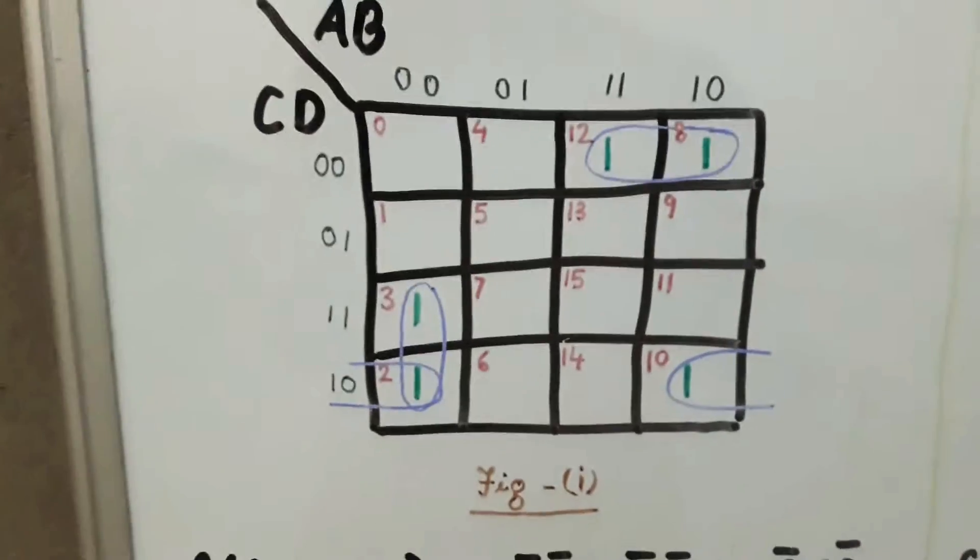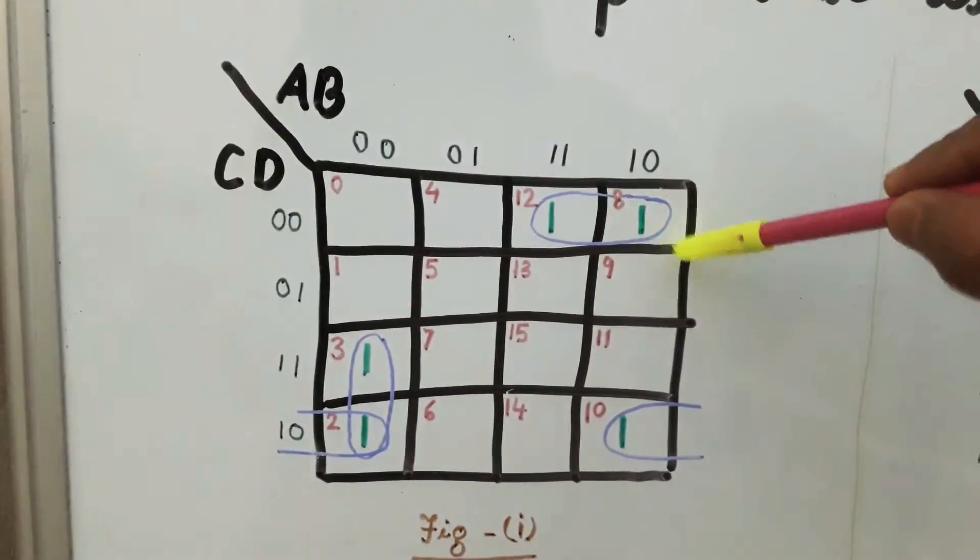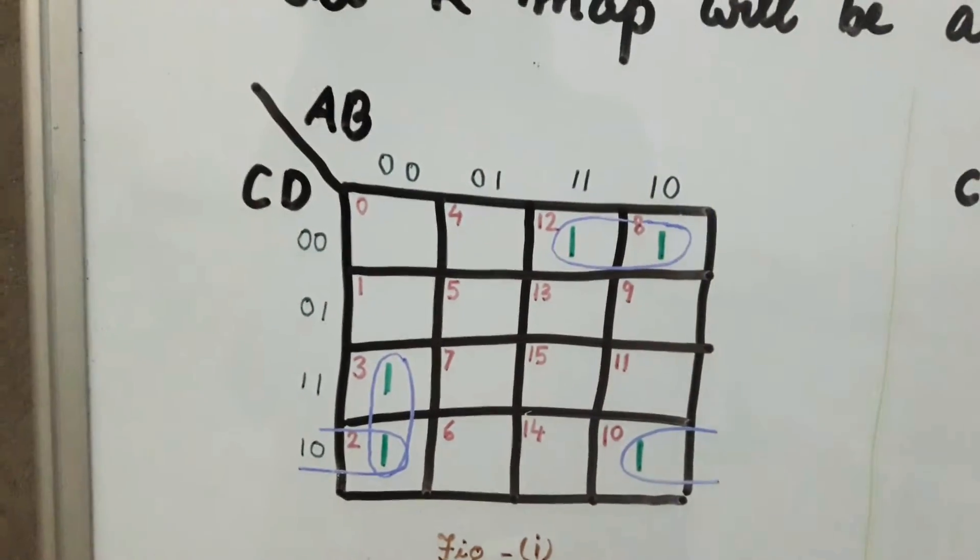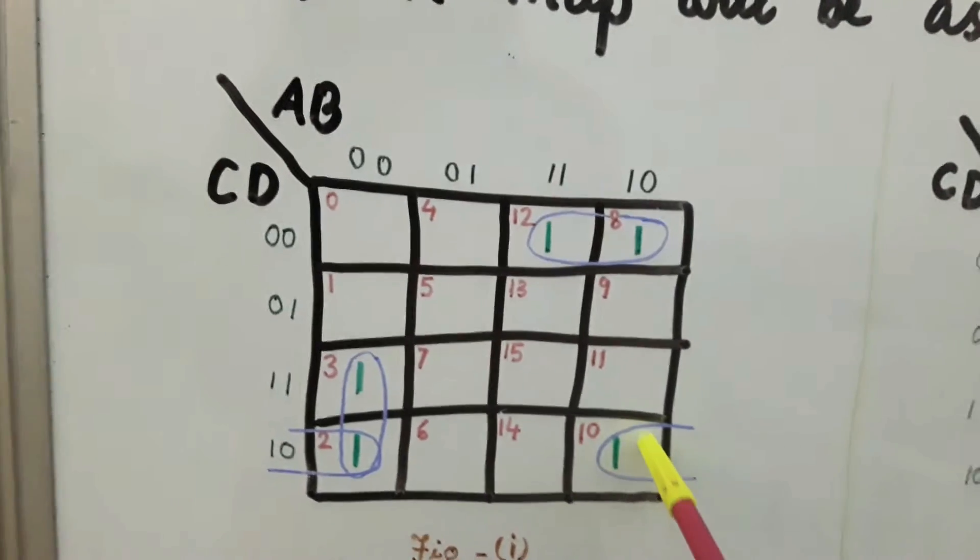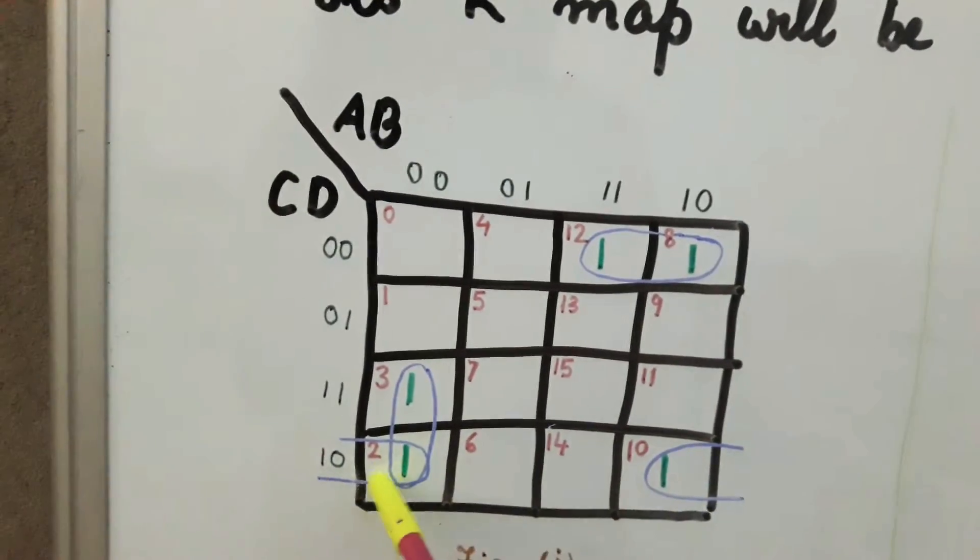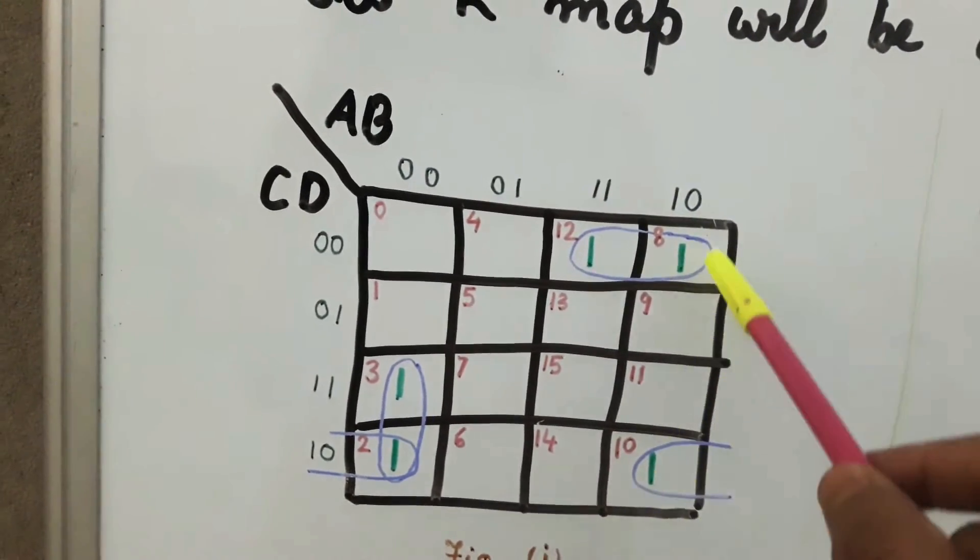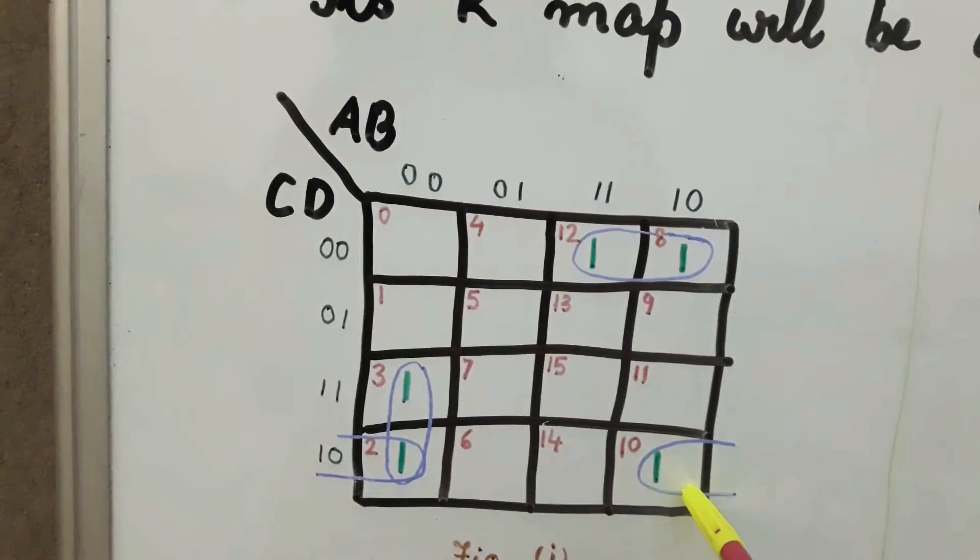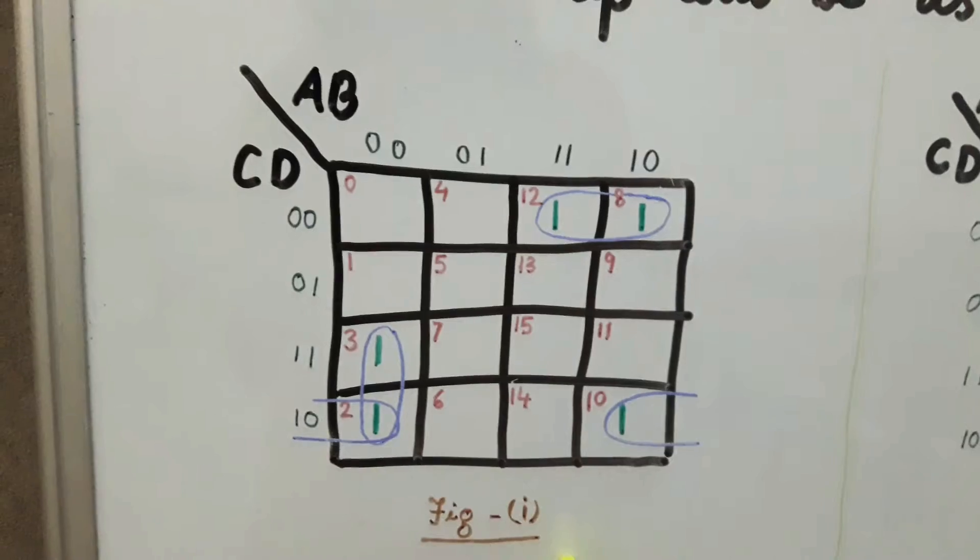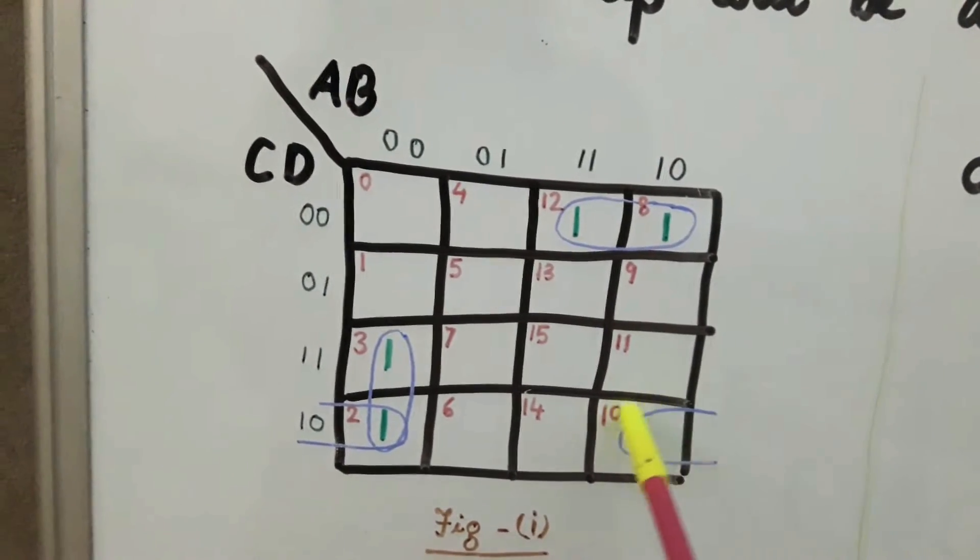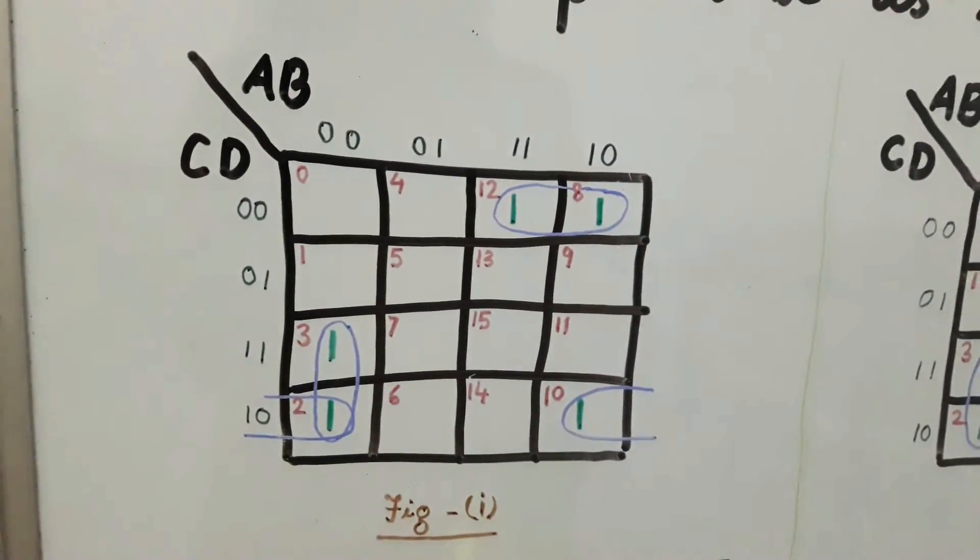Now from figure 1 we find that these two ones are involved in a two-grouping combination. Similarly, these two ones will also make a two-group combination. Now this one can make a combination either with 2 or with 8. So we can combine either M8 plus M10 or M2 plus M10. In the first figure we are taking the grouping of M10 with M2. So we will get the K-map as shown in figure 2.